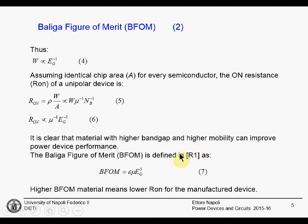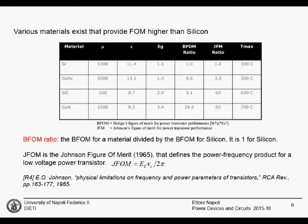In the 1992 paper from Baliga, he presented the Baliga Figure of Merit — this parameter epsilon·mu multiplied by the cube power of the critical electric field (related to bandgap). In the paper, it is shown that materials with higher figure of merit will provide lower on-state resistance. This is the theory: if we can have materials with higher bandgap and higher mobility, we could improve on-state resistance. But which are the actual materials we can use?